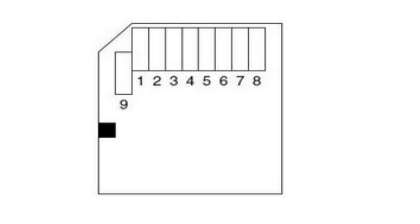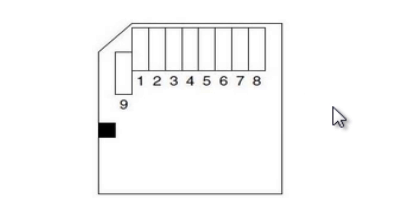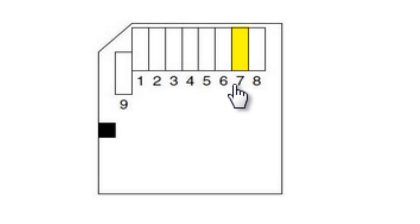In SD bus mode, all the pins of the SD card are used. Data is transferred using 4 pins — data 0 to data 3 — a clock pin, and a command line pin. In SPI bus mode, which is the most commonly used mode for SD cards, the normal SPI pins are used. For the SD card, the chip select pin is pin 1, data in is pin 2, the clock pin is pin 5, data out is pin 7, the positive supply is pin 4, and the ground is pin 3 and pin 6.